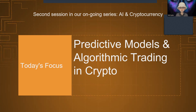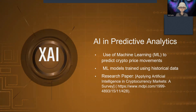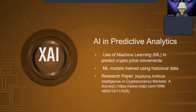To start, let's bring into focus AI's role in predictive analytics. Machine learning models are trained to predict future behavior, specifically price movements in the case of cryptocurrencies and even forex markets, using historical data. AI tries to predict price movement using historical data. There is a comprehensive overview of this topic in a research paper called 'Applying Artificial Intelligence in Cryptocurrency Markets: A Survey,' and I will drop the link later in the comment section.